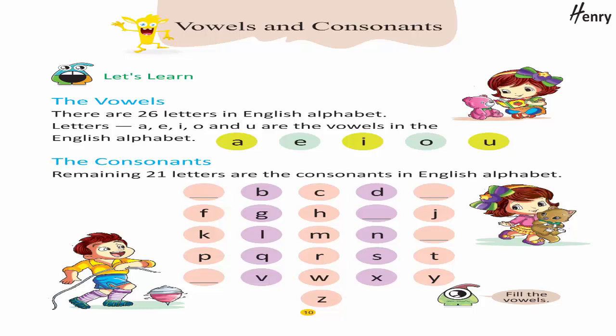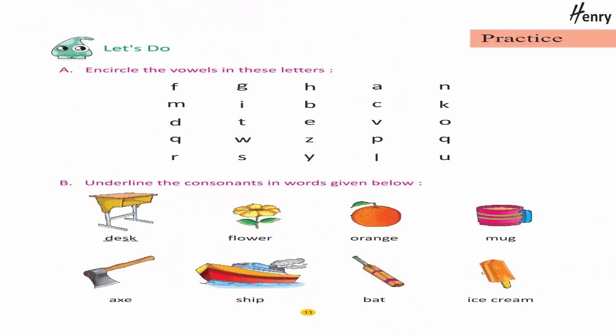The consonants are: B, C, D, F, G, H, J, K, L, M, N, P, Q, R, S, T, V, W, X, Y, Z. Fill the vowels. Practice: let's do — encircle the vowels in these letters.